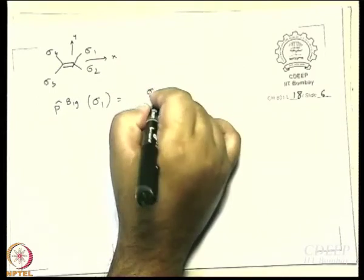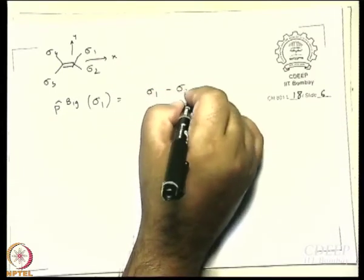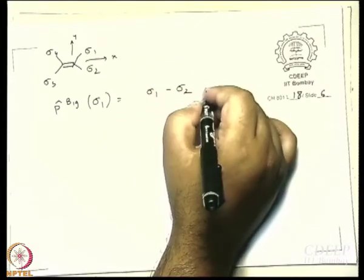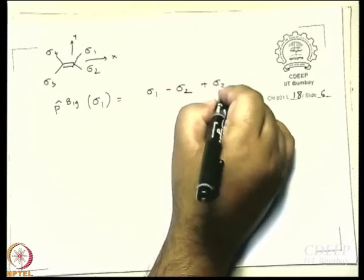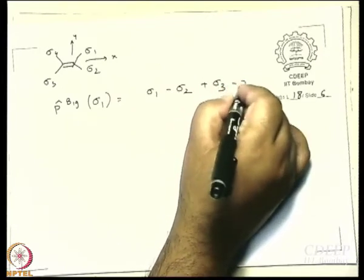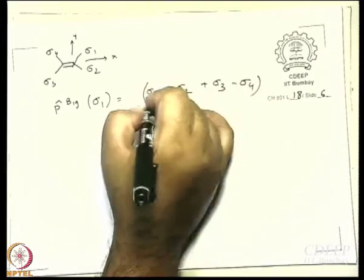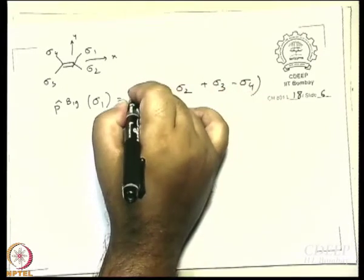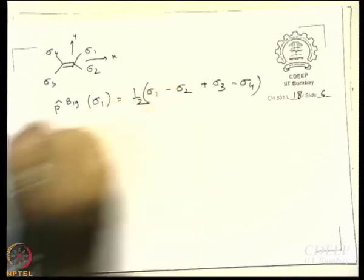Sigma 1 then plus sigma 3. Very good. The normalization constant will be the same.